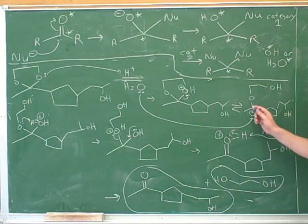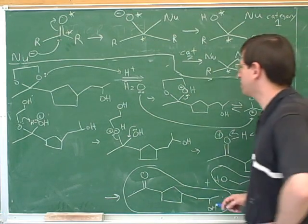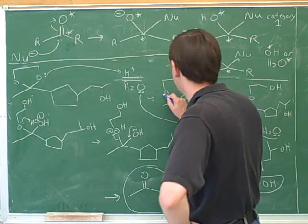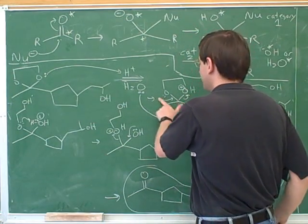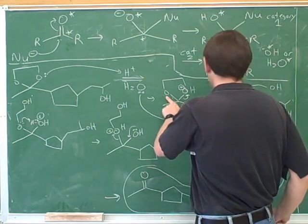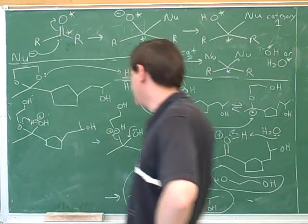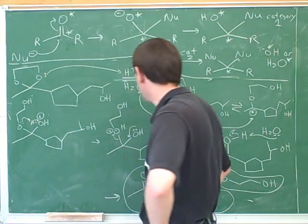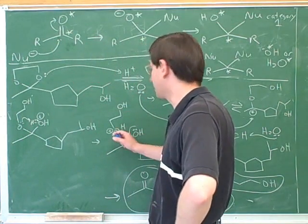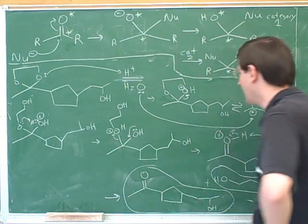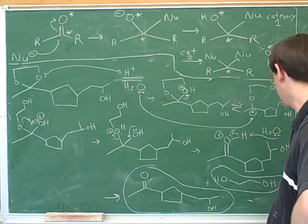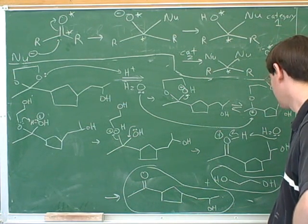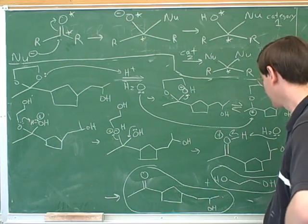Your instructor might have drawn this showing the lone pair kicking this off, but we didn't show it that way. Then the water came in, and we showed the water kicking off the alcohol. The two alcohols left as part of a single molecule here because we started with the cyclic ketone. So we ended up with our diol.